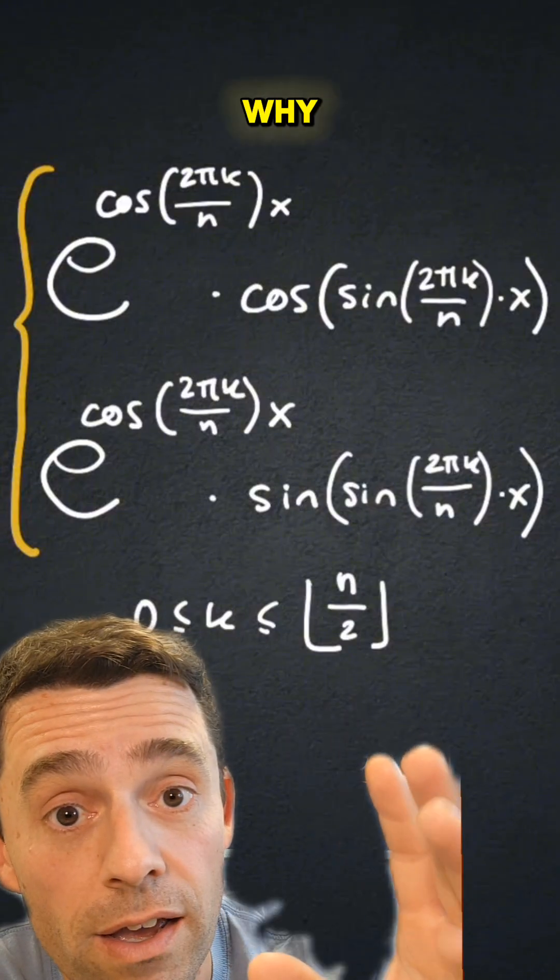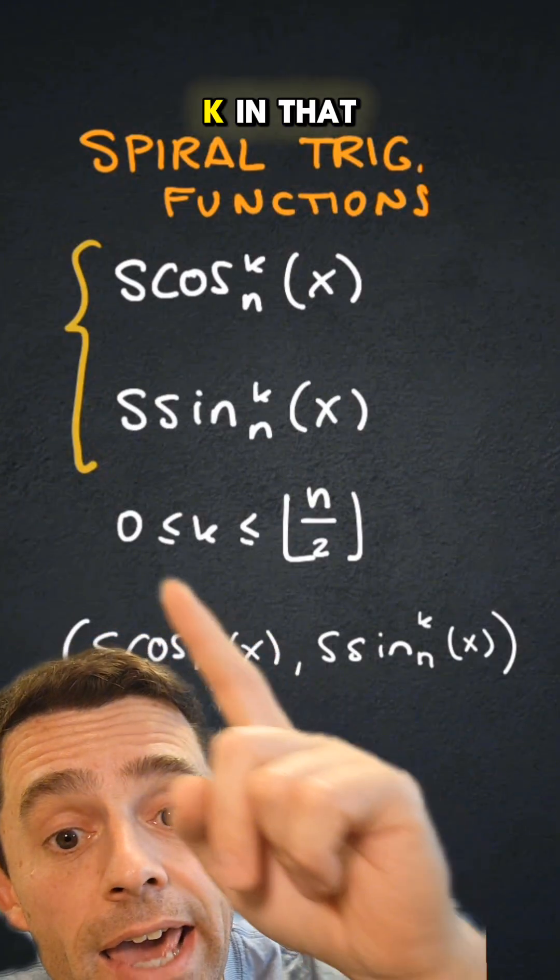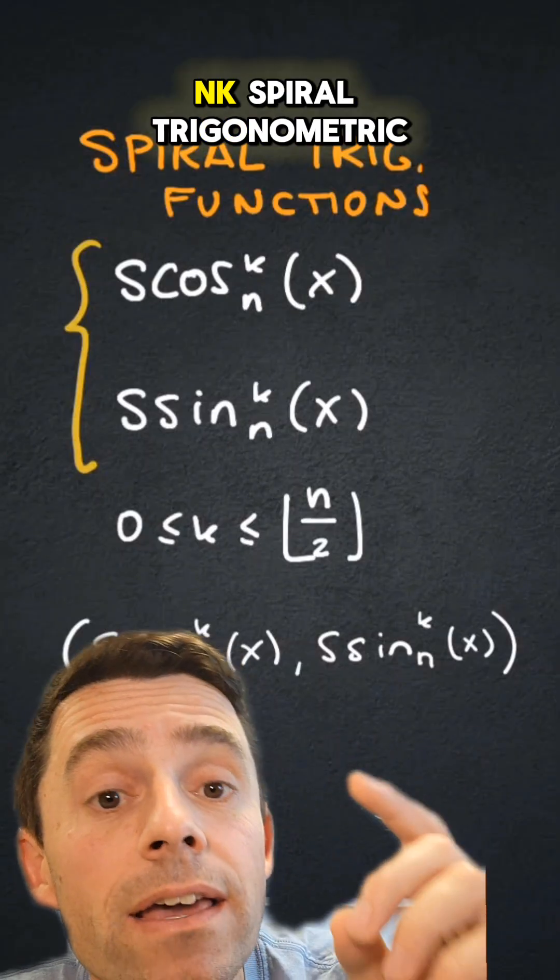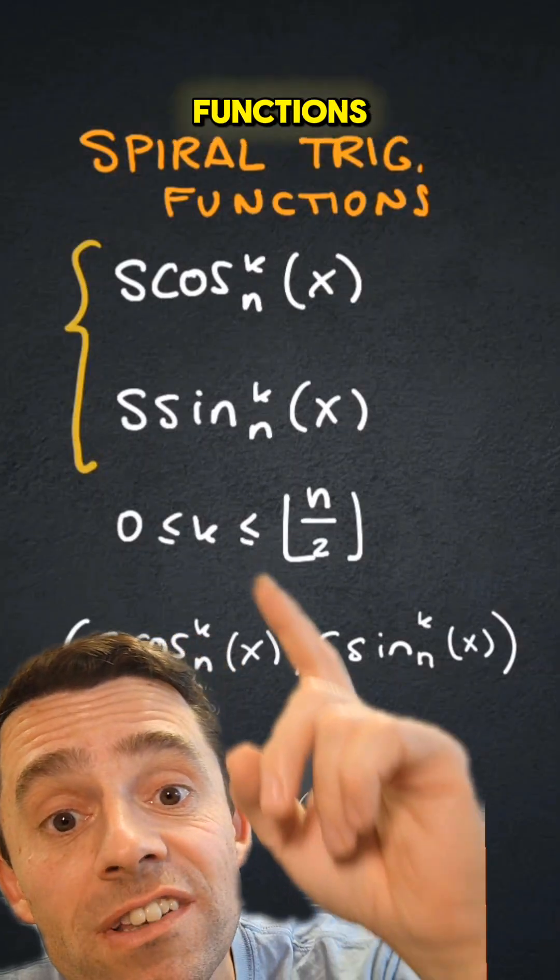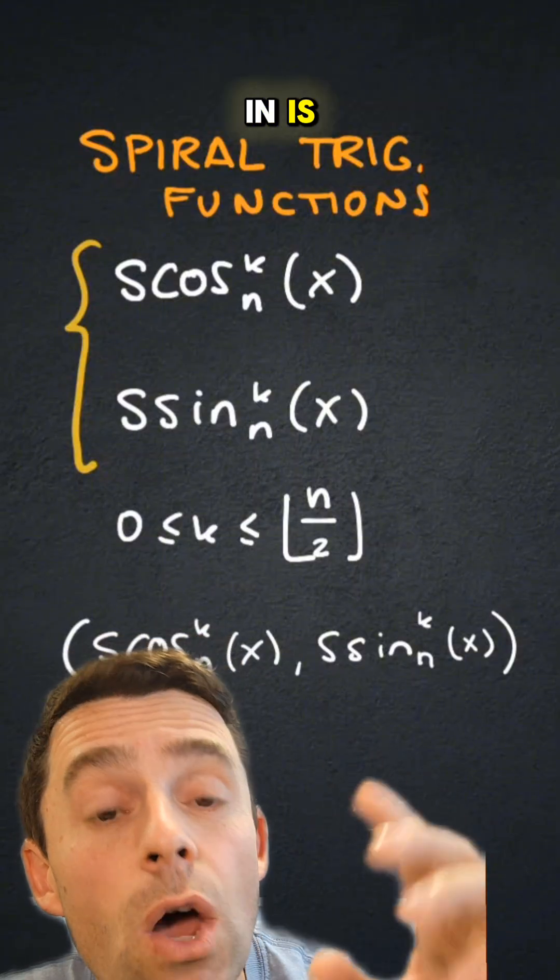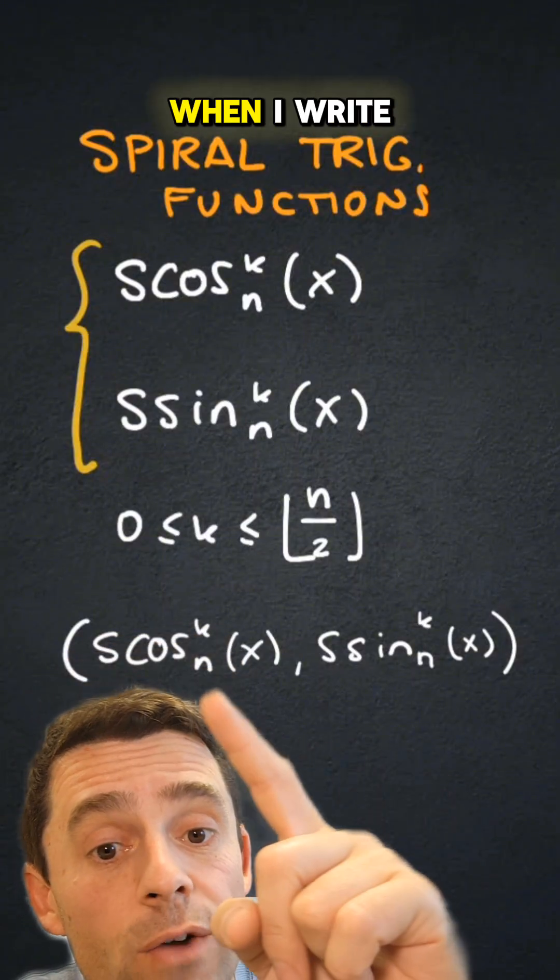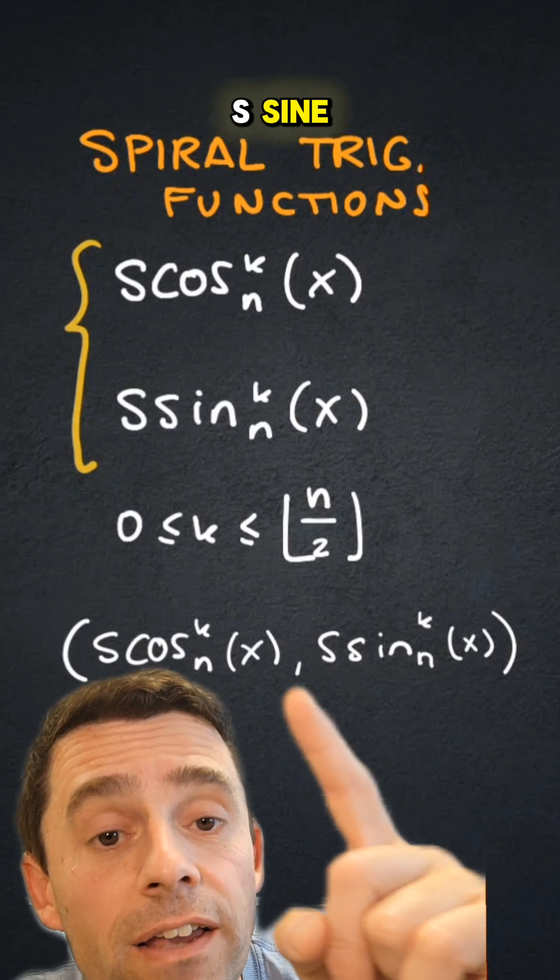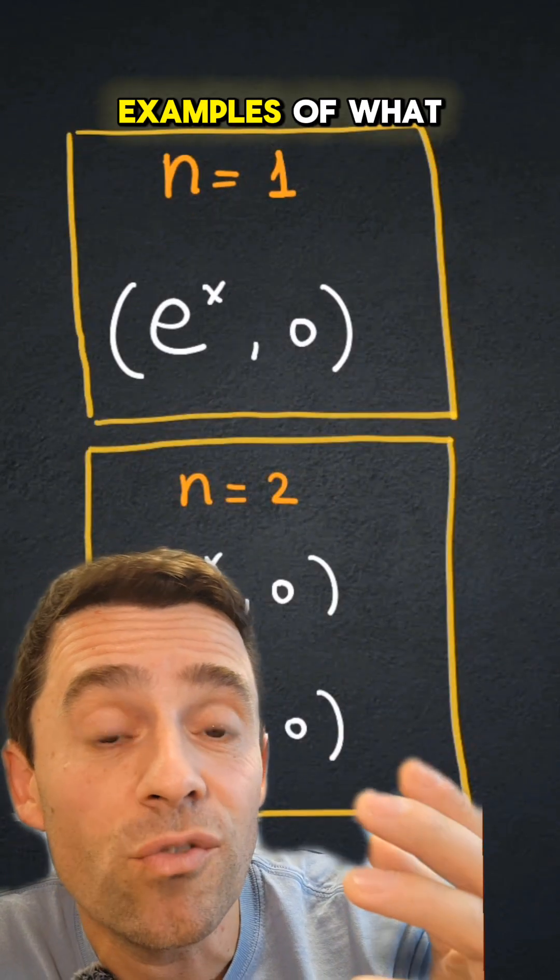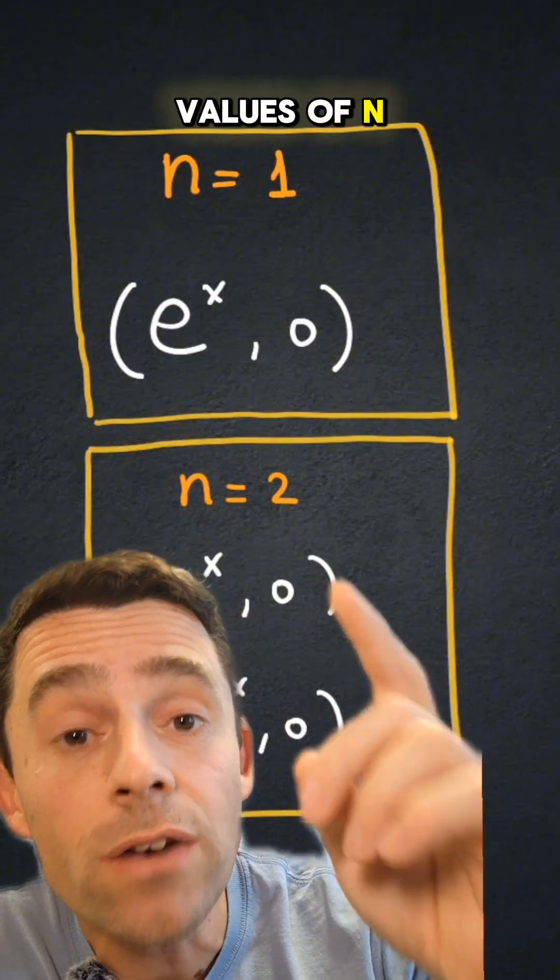Let me show you why. For a fixed value of n and k in that range, we're going to define the nk spiral trigonometric functions s cosine and s sine. And what I'm going to be interested in is what graph do they parametrize when I write s cosine and s sine and let x be a parameter. So let me give you some examples of what happens for small values of n.